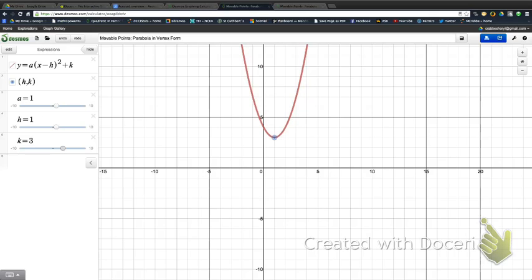And what does the k do? Well, as k gets bigger, it moves up, and as k gets smaller, it moves it down. So that's what k does to the graph, but it's basically doing it to the vertex. It's just doing it to the vertex.